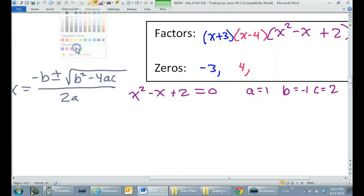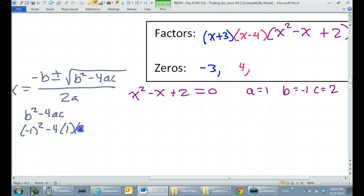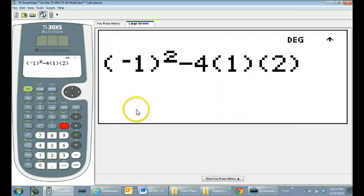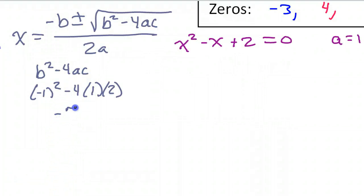Now what I like to do is I always like to calculate the b squared minus 4ac separately. That part is called the discriminant. So let's calculate that separately. b squared minus 4ac, focus on that part, the discriminant. So that would be negative 1 squared minus 4 times 1 times 2. If you're going to use your calculator to do this at all, please put the negative 1 in parentheses. So we're getting negative 7 out of this.